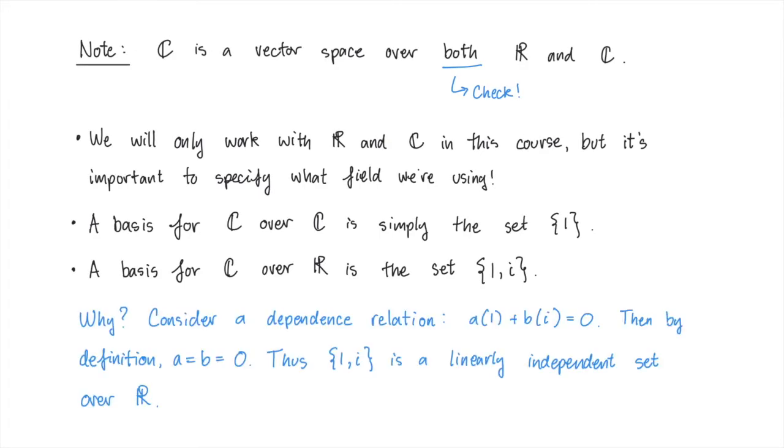Why is this? Well, consider a dependence relation of the form a times 1 plus b times i equals 0, where a and b are both real numbers. By definition of a complex number, this means that a and b must both be 0. In other words, 1 and i are linearly independent elements over R. They also form a spanning set for C, which means that this is a basis.